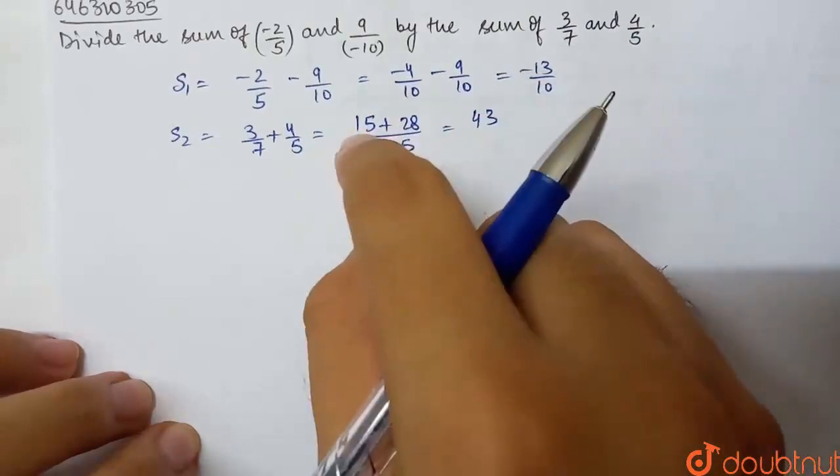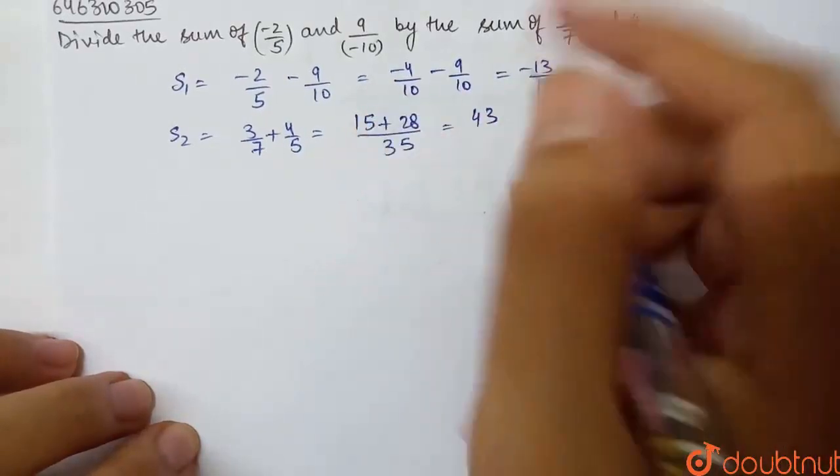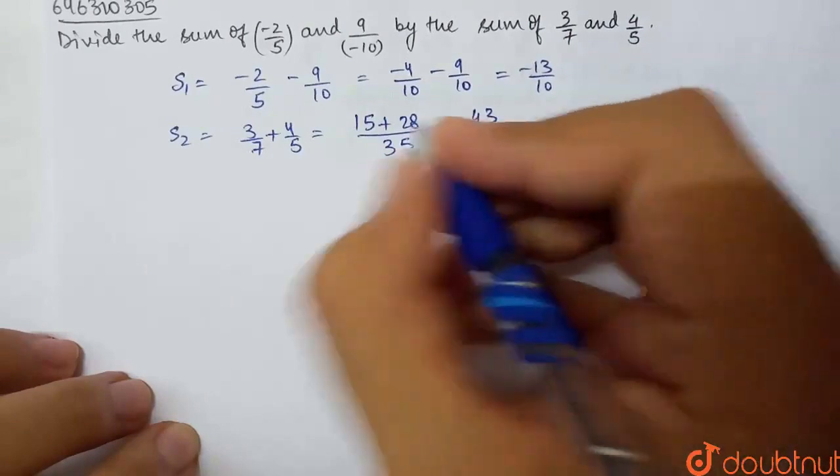This is nothing but 43. Now I have 28 plus 14, what is this? 42 plus 1, 40, 3 by 35. So sum 2 is.